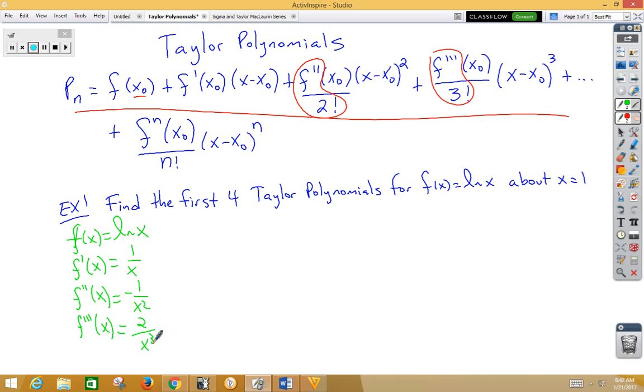Since we want the first four Taylor polynomials, we're going to need four of these, and we do have four of these. This is about x equals 1, which means we need to find f of 1, which is the natural log of 1, which is 0.